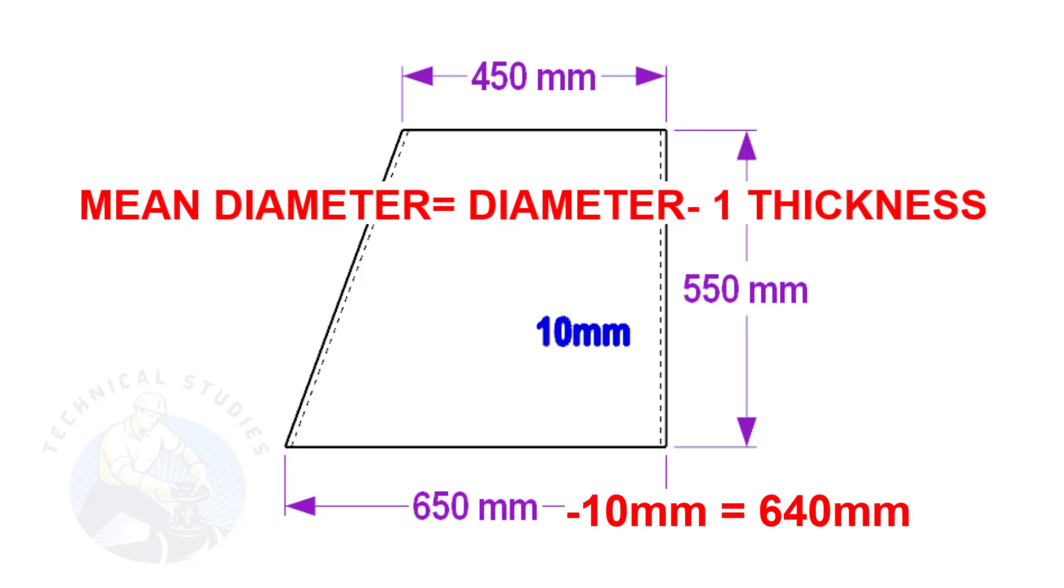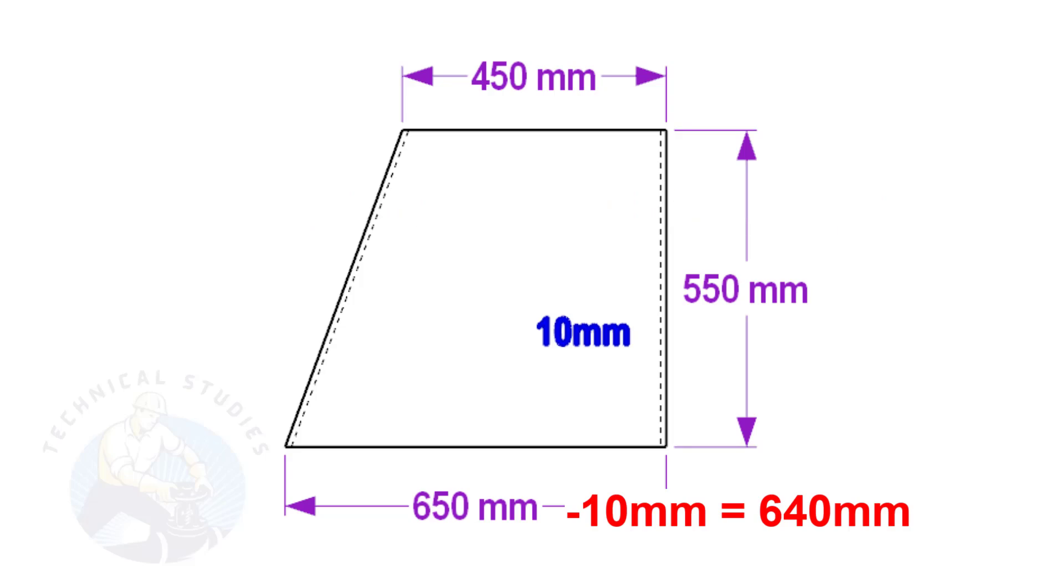Assume the base diameter of the cone is 650mm and the thickness is 10mm. The mean diameter is 650 minus 10, equal to 640mm. Similarly, deduct 10mm from 450 to get the mean diameter of the top side.